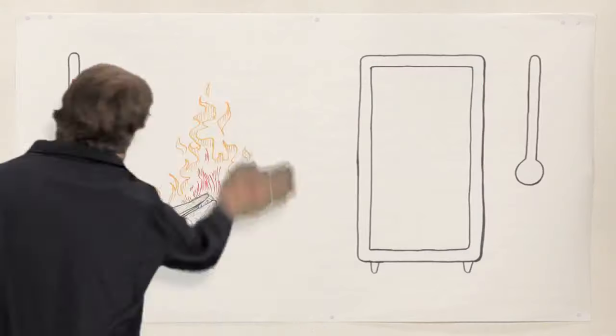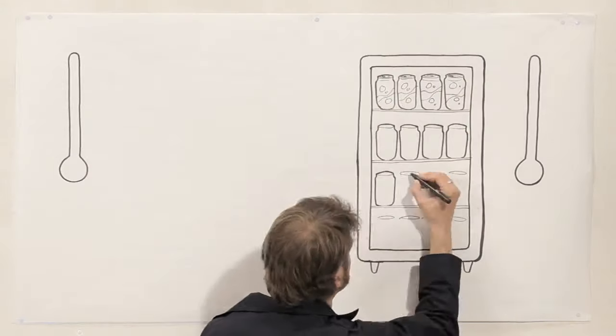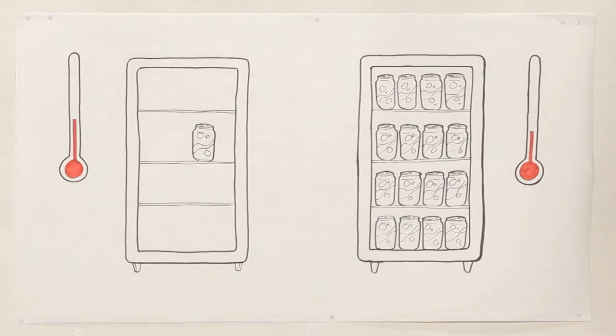When heat is transferred by conduction, the material absorbs and stores some heat energy. It's called thermal inertia. Water has a much higher thermal inertia than air, so a fridge full of cold drinks will keep cool longer than an empty fridge if the power goes out.